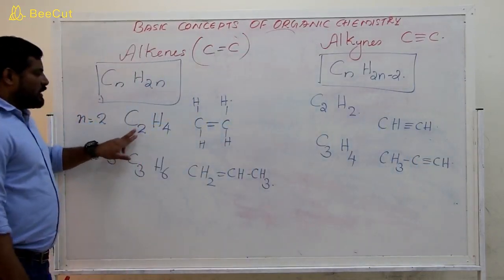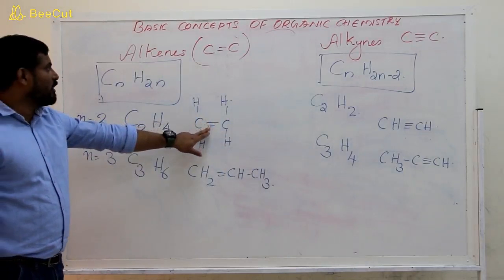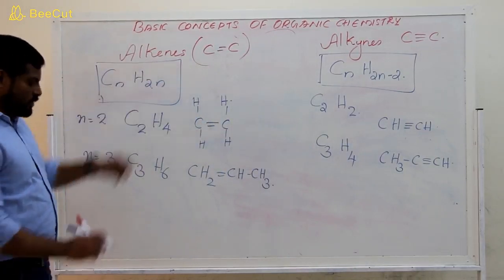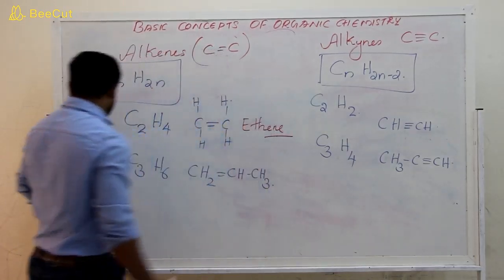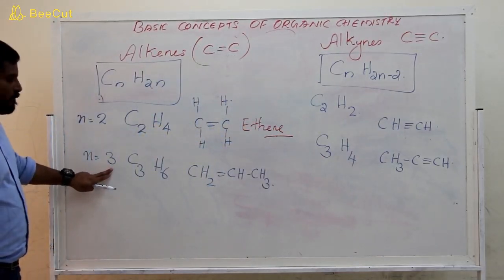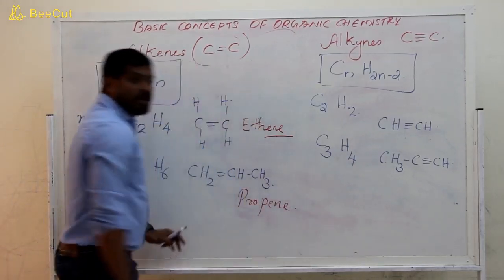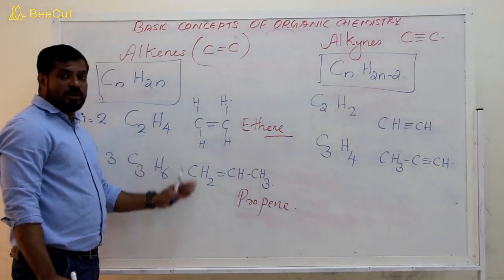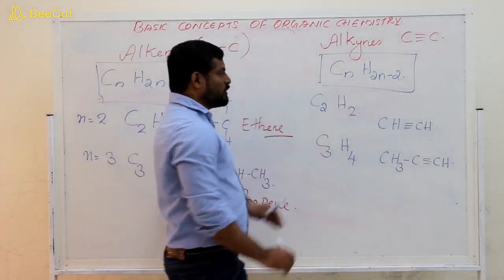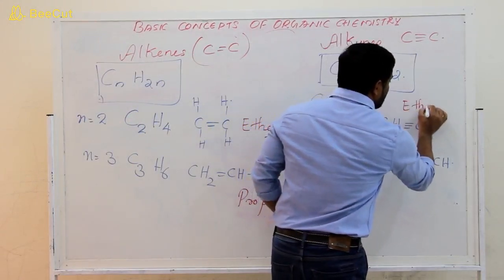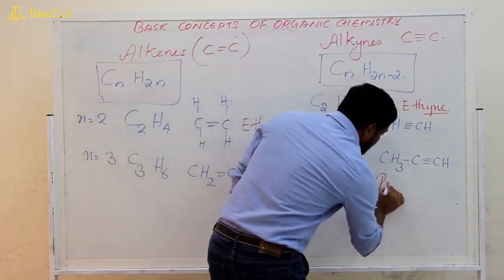Look at this compound — it contains two carbon atoms, so the root name is eth-. It contains a double bond and belongs to the alkene family, so the name of this compound is ethene. For N equals 3, the root name is prop-, so the name of the compound is propene. For the alkyne with two carbon atoms, the compound is ethyne. With three carbon atoms, the compound is propyne. In our future videos, we will discuss further about how we name organic compounds.